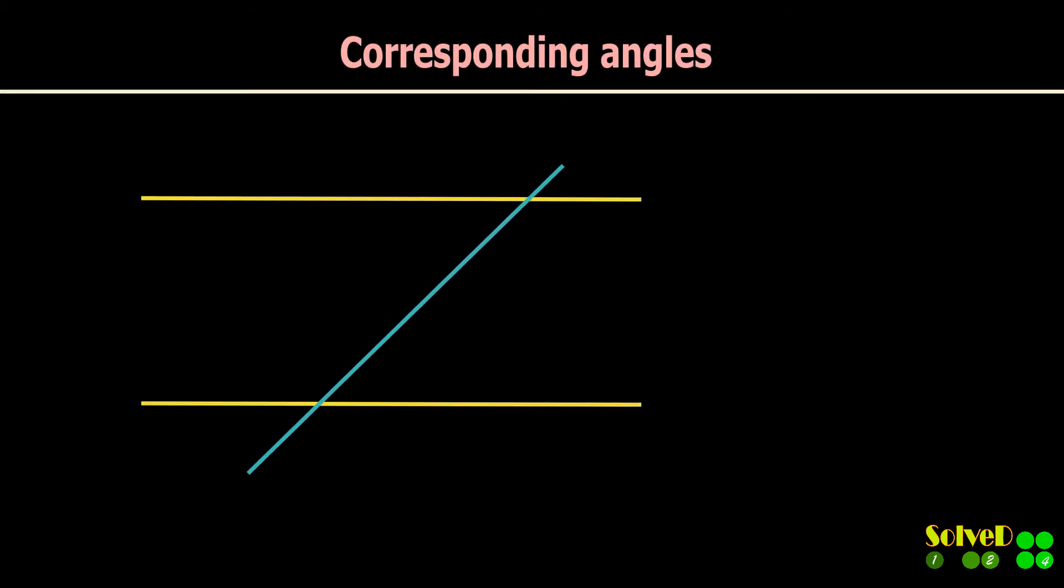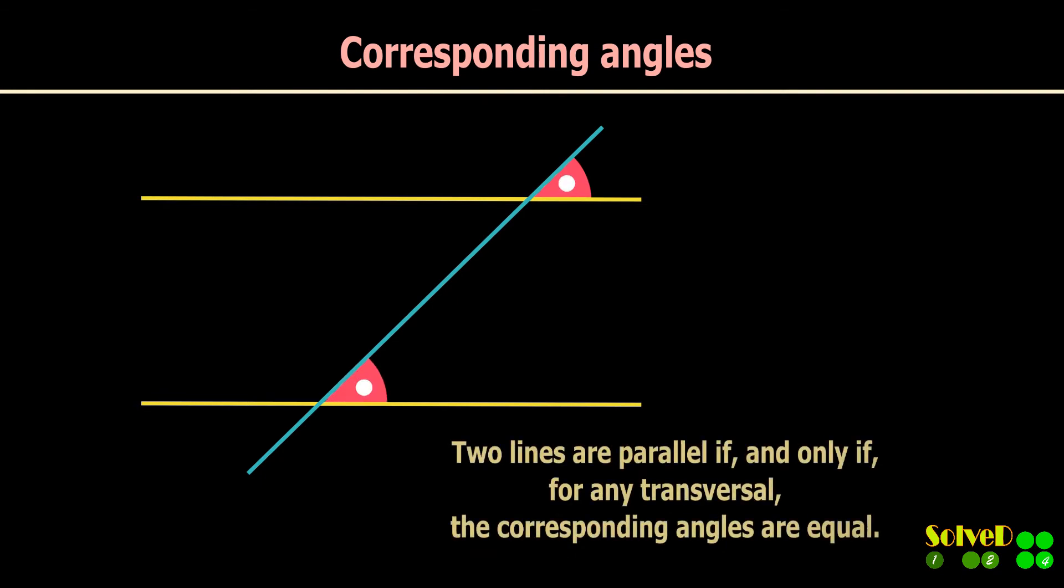Two lines are parallel if and only if for any crossing line the corresponding angles are equal as shown.